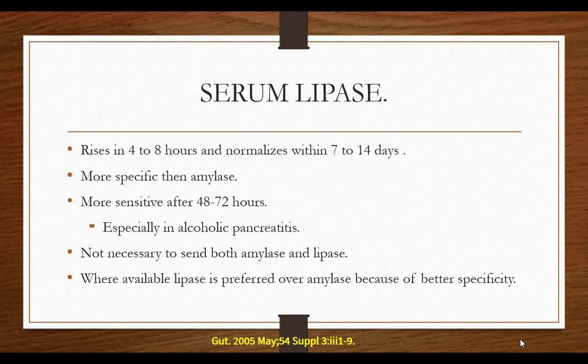Is there any necessity for sending both amylase and lipase? No — it doesn't improve the accuracy of diagnosis. My suggestion: if you are not suspecting alcoholic pancreatitis, not suspecting hypertriglyceridemia, patient is within 48 to 72 hours, and not having renal insufficiency — send amylase, because it is cheap and easily available. Otherwise send lipase. There is at least one guideline, published in 2005, which suggests that if lipase is available it is preferred over amylase.